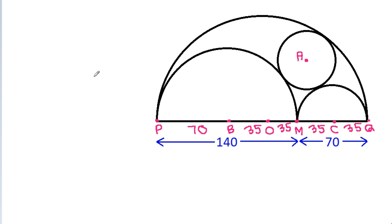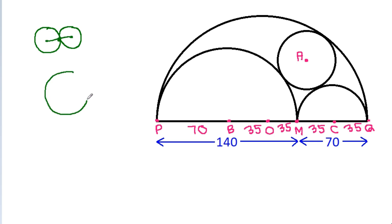Now, if two circles are touching each other and if we join the centres of both circles, then the line will pass through the common point of contact. And also, if two circles are touching each other entirely and if we join the centres of both circles, then it will pass through the common point of contact.